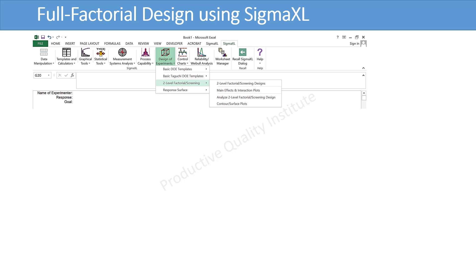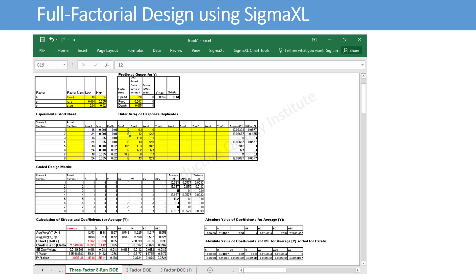In order to analyze DOE results, click Sigma XL, then Design of Experiments, then click Analyze Two Level Factorial Screening Designs. Here is the output of Analyze Two Level Factorial Screening Designs. Now, we will check the table, Calculations of Effects and Coefficients, and Predicted Output for Y.